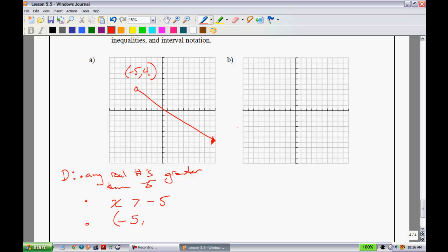And since it's going onward forever, we're going to put positive infinity. And since infinity is something that you can never reach, we're going to also use the curly brackets, like so. That's the domain for that one.